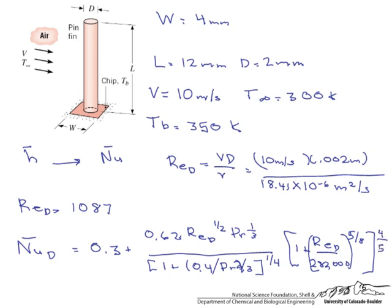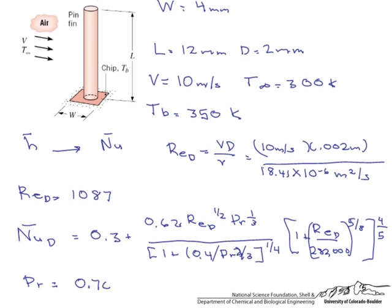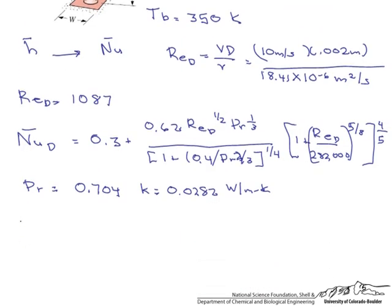So the Prandtl number for air at this temperature is 0.704. And while we are at it, let's have the K because we are going to need it: 0.0282 watts per meter K. So when we put in our Reynolds number, when we put in our Prandtl number and solve, what we end up with is an average Nusselt sub D equaling 16.7.